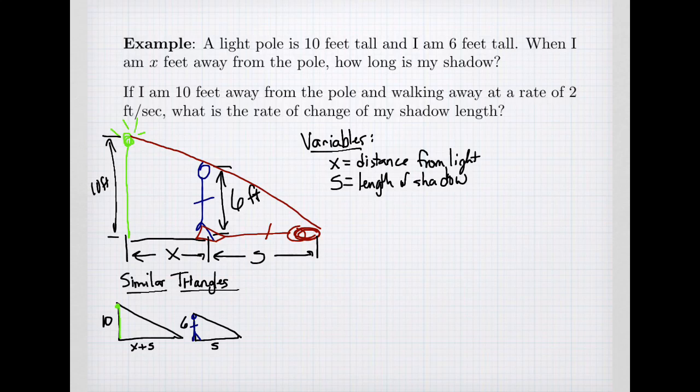The principle of similar triangles allows me to create ratios. The height 10 is to the base x plus s. That ratio has to equal the height 6 to its base s. If I cross multiply, I get a new equation that says 10s equals 6 times x plus s. This is the equation that relates my quantities.